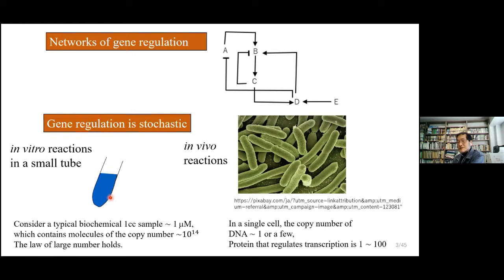This is because cells are small, mesoscopic systems and the copy number of molecules inside cells is small. Particularly, DNA is only one or a few copies inside the cell. This is in sharp contrast to macroscopic test tube experiments, where we have copy numbers of 10 to the power of 10 or more. So the law of large numbers does not hold in these mesoscopic systems, and we can expect large fluctuations in biochemical reactions, particularly in gene regulation.